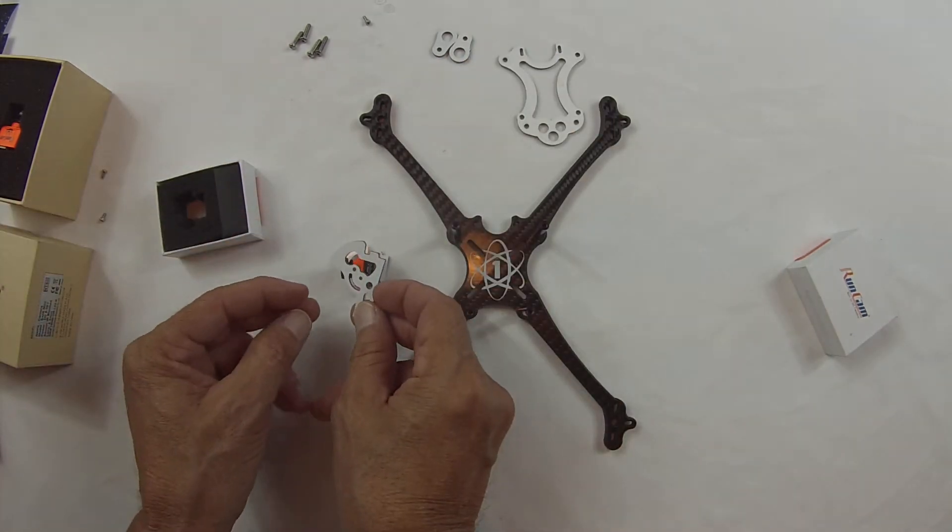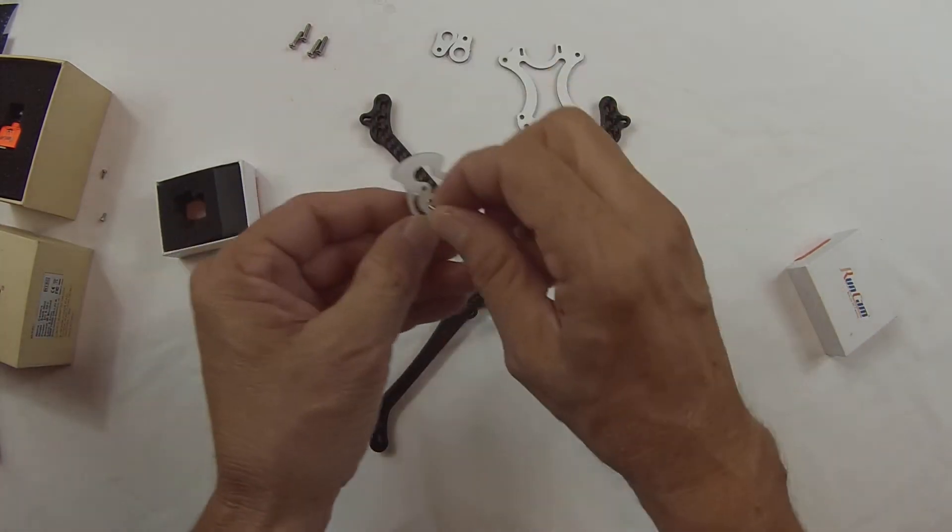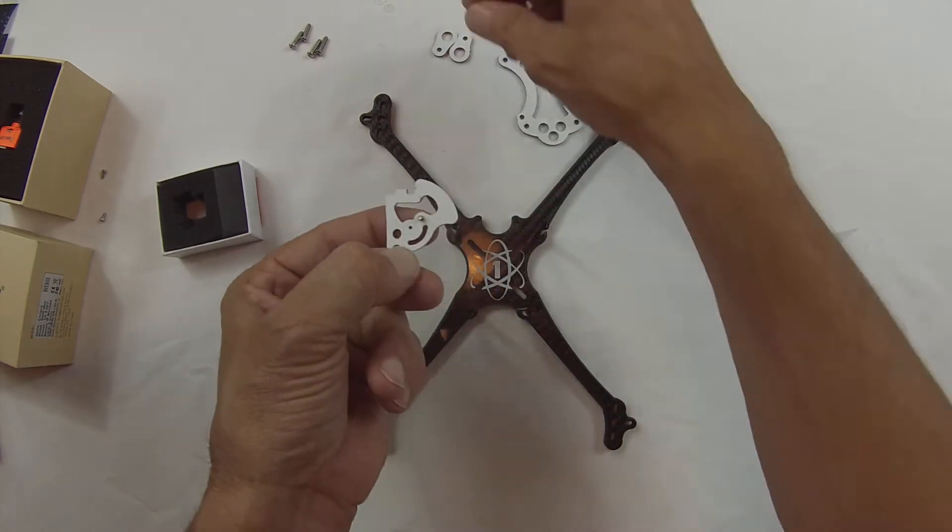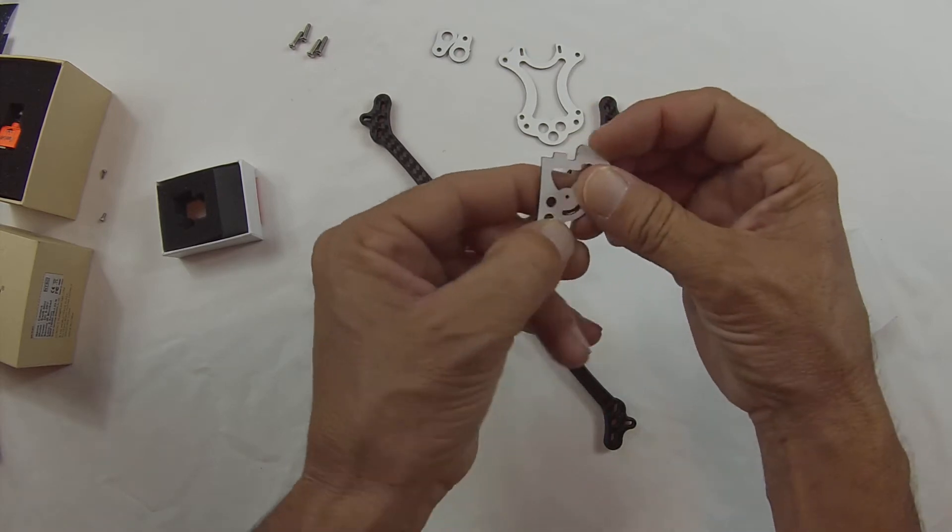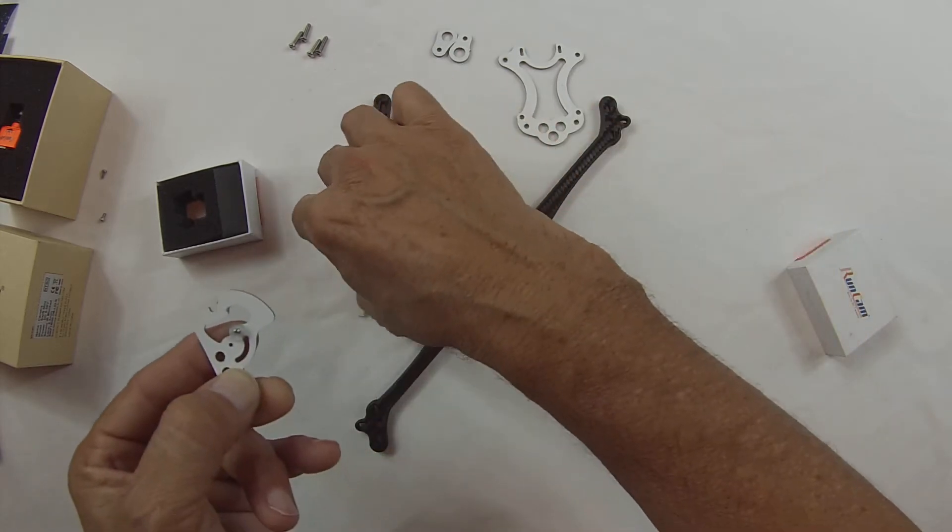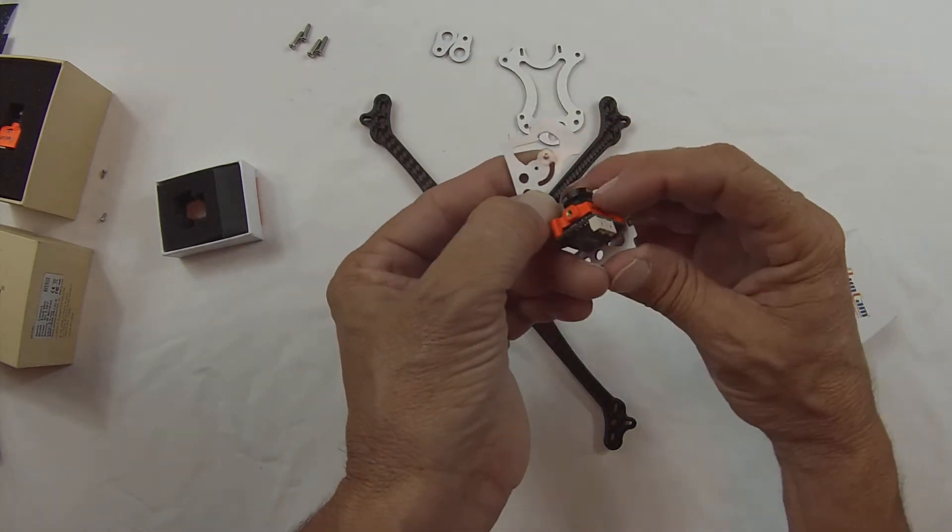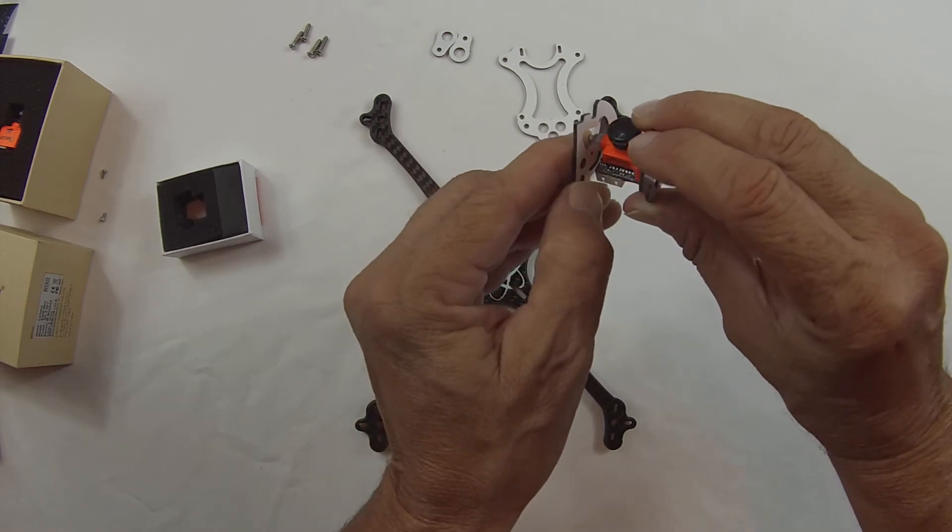Grab the other one and do the same. Like so. Grab both washers. Grab your camera. And screw it in.